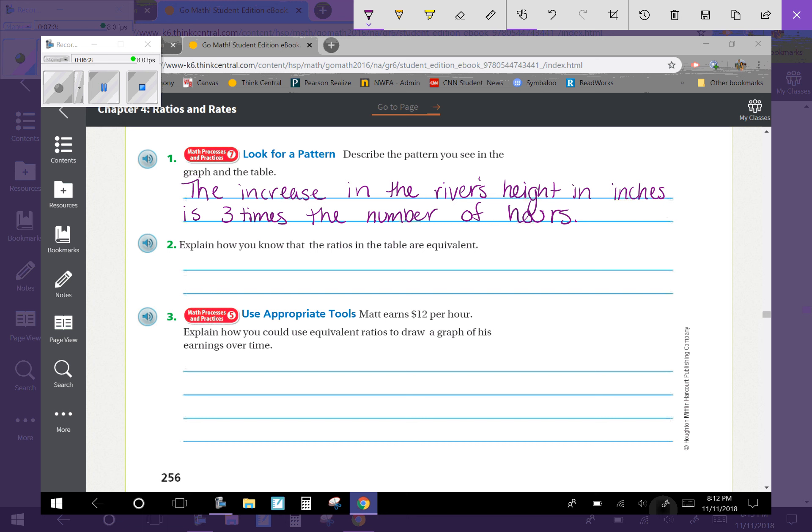Number 2 says explain how you know that the ratios in the table are equivalent. You can write each ratio in the table as the unit rate. For example, if we look at 24 over 8, if we divide both of those by 8, we would get our unit rate 3 over 1. And that would work for any of the numbers listed up there. There are other ways that you could explain how you know those are equivalent, but that's just one example.